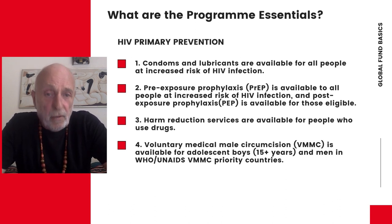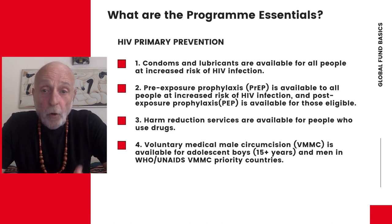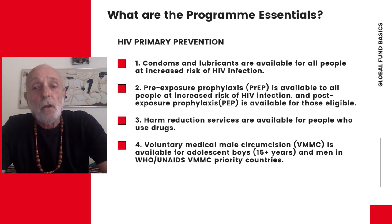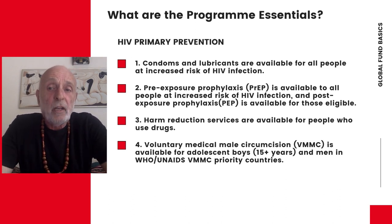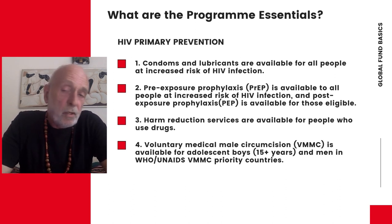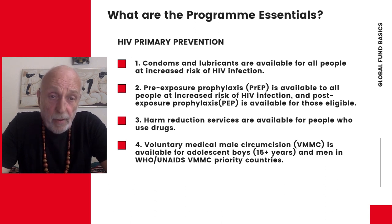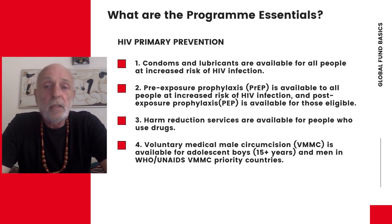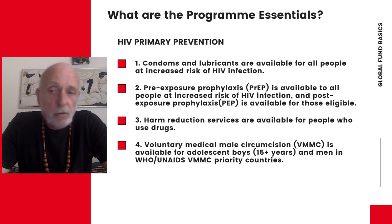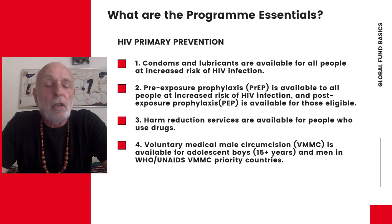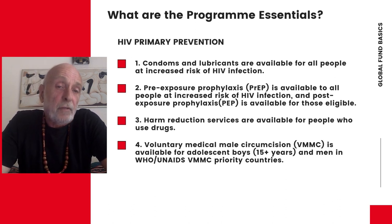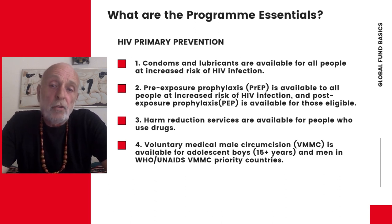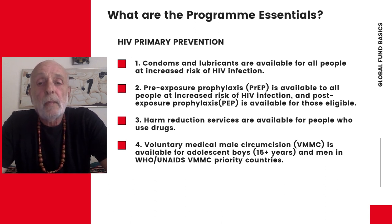The first theme is HIV Primary Prevention. There are four Program Essentials under this theme. Condoms and lubricants are available for anybody at increased risk of HIV. Pre-exposure prophylaxis (PrEP) and post-exposure prophylaxis (PEP) are available for everyone who's eligible. Harm Reduction Services are available for people who use drugs. And Voluntary Medical Male Circumcision (VMMC) is available for adolescent boys who are 15 years and older, and men in WHO/UNAIDS Voluntary Medical Male Circumcision Priority countries.